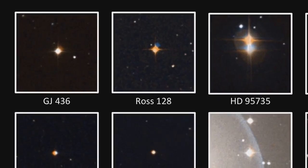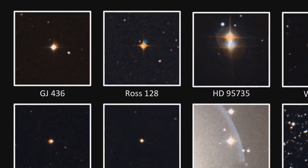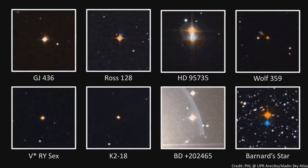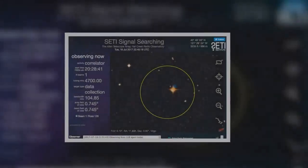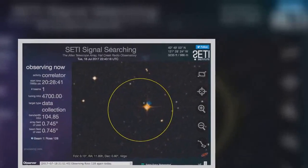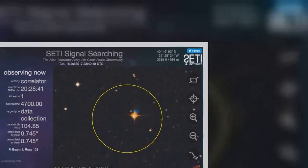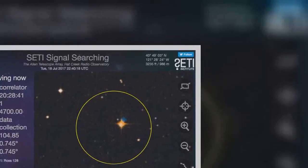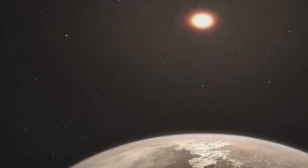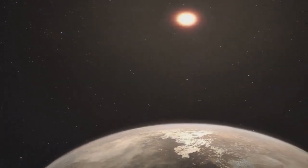The new world was discovered by a team using the high-accuracy radial-velocity planet-searcher instrument at the La Silla Observatory in Chile. The work will be published in the journal Astronomy & Astrophysics.